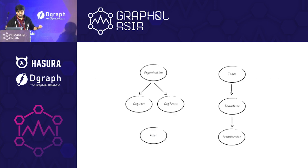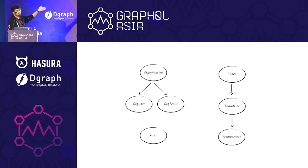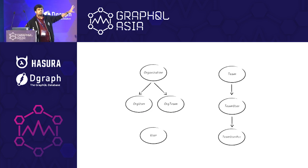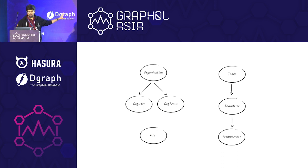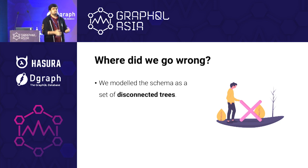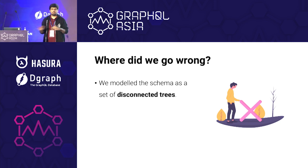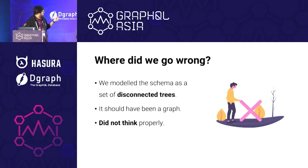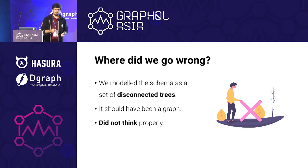If we look at it more graphically, this is how your schema looks. You have different types and that's how they are related. The biggest problem that pops out is that we modeled the schema as a set of disconnected trees and not as a graph — whereas it should have been a graph in the first place, because, well, GraphQL. And the reason this happened is because we did not think properly from the first shot.